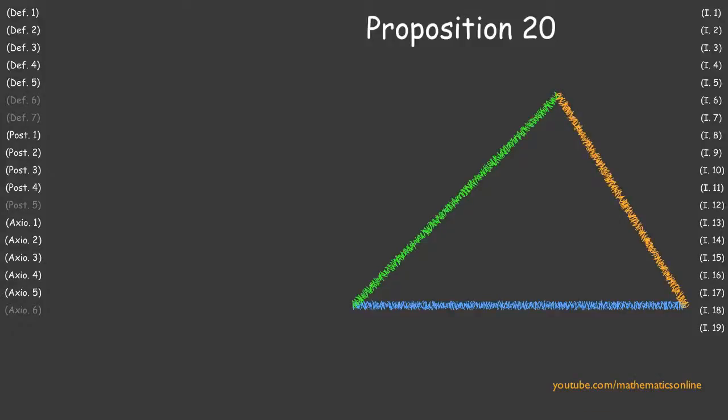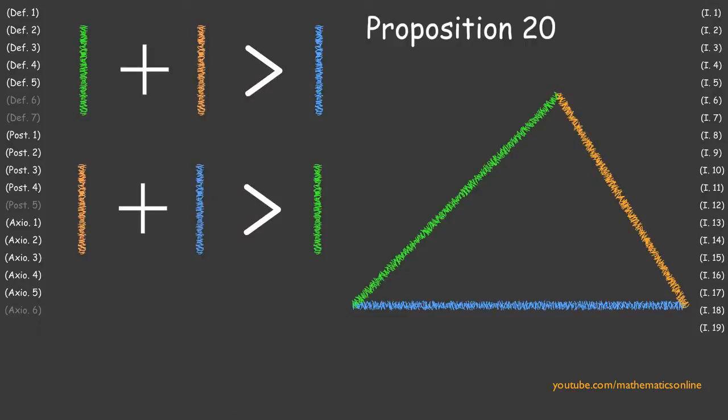In Proposition 20, we prove that the sum of any two sides of a triangle are always greater than the remaining side.